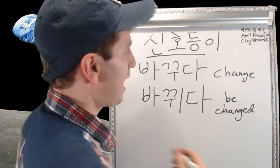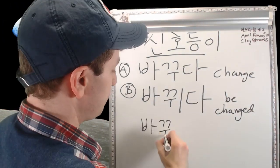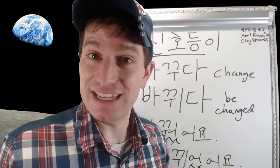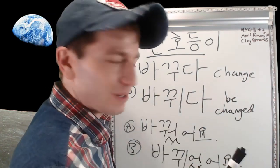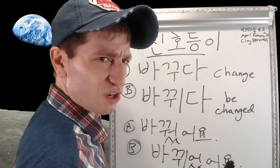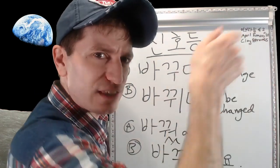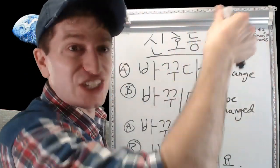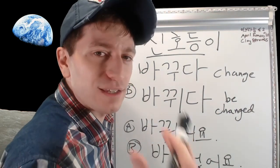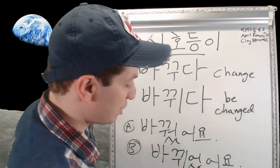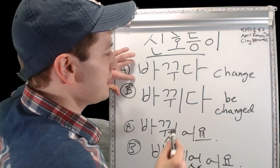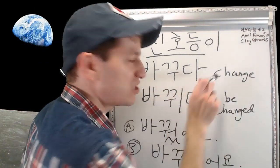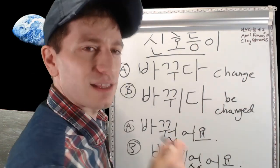신호등 means 'traffic light.' How would you say 'the traffic light changed'? You need to use 바뀌다, not 바꾸다. If you say 신호등을 바꿨어요, it means somebody changed the light — like someone controlling a switch. If you say 신호등이 바꿨어요, it means the light itself changed something, but we don't know what it's changing — there's no object. You need to say 신호등이 바뀌었어요. In English we say 'change' for both, but in Korean 바꾸다 is active (takes an object) and 바뀌다 is passive (no object — the subject itself is what's changing).